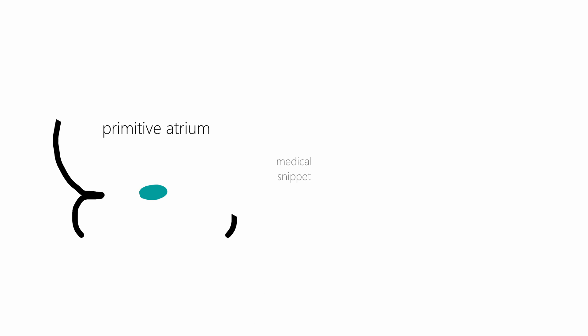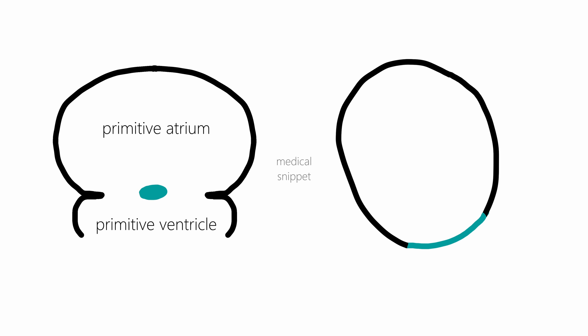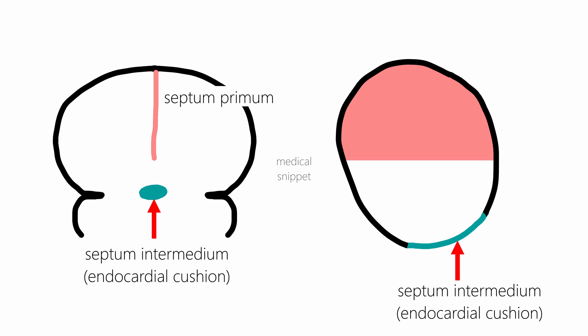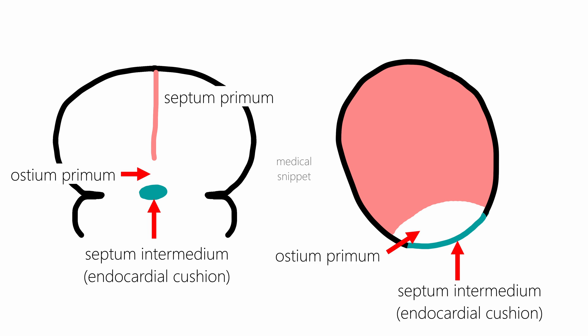Now let's draw the primitive atrium and ventricle separately for better understanding. By the fifth week of embryo development, a thin septum called septum primum begins to develop from the roof of the primitive atrium. It extends towards the septum intermedium or the endocardial cushions. The gap between the septum primum and the septum intermedium is called the ostium primum — that is the first formed opening.